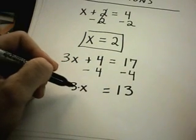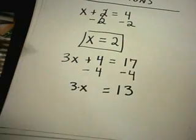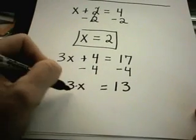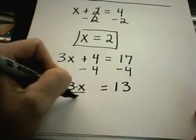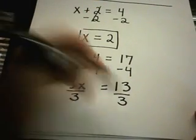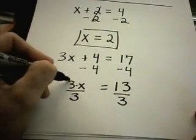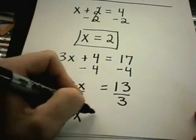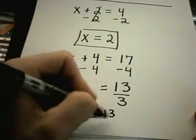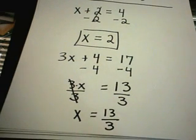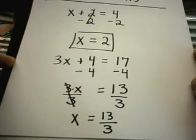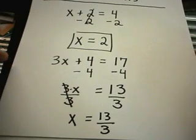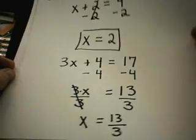Now I want to get the x by itself, but notice it's being multiplied by 3. To undo multiplication, I do division. If you divide one side, you have to divide the other side as well. The 3's will cancel out, leaving you with x equals 13 over 3. Not a nice whole number, but that's okay. There's no rule that says the solutions have to be whole numbers. Let's keep on doing some more of these basic linear equations.